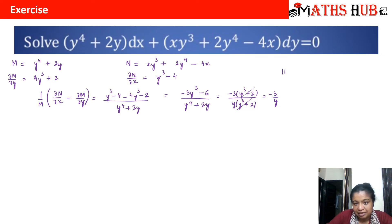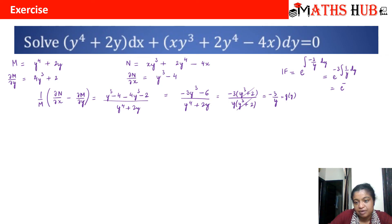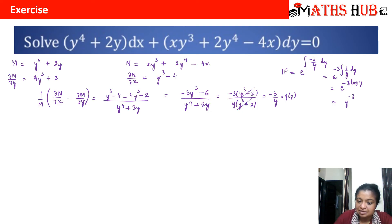So what is our integrating factor? The integrating factor is e raised to power ∫g(y) dy, which is ∫(−3/y) dy. Taking −3 common gives −3 ∫(1/y) dy = −3 log y. Taking −3 as the exponent gives e^(log y^(−3)), so the integrating factor is y^(−3).